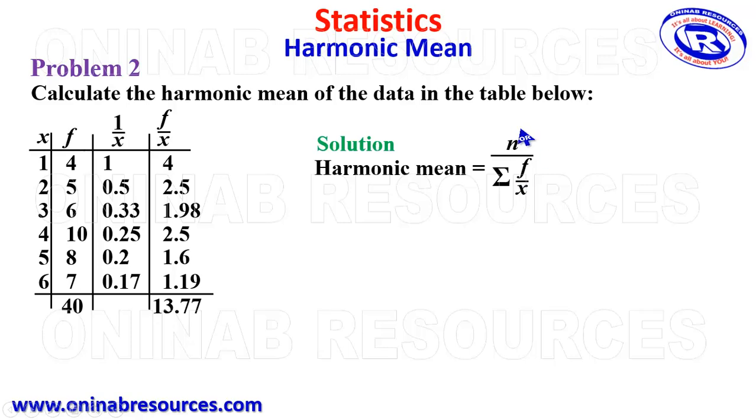We then substitute into the harmonic mean formula. Our n is 40, so we have 40 divided by our sigma f over x, which is 13.77. 40 divided by 13.77 gives 2.90, giving us the harmonic mean of the data represented in the table for problem 2.